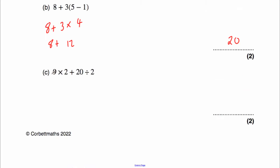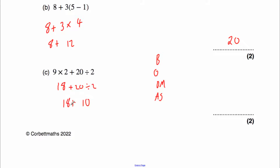Question c: work out 9 multiplied by 2 plus 20 divided by 2. No brackets, no orders, but we do have a multiplication and a division. Working left to right, we do 9 times 2 first, which is 18. Then 20 divided by 2 is 10. Finally, 18 plus 10 is 28.